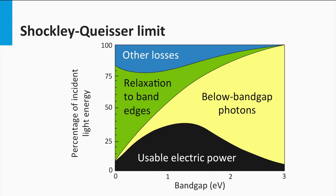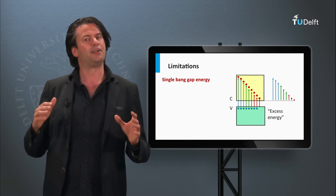As a result, the maximum efficiency which can be achieved is around 33% in the bandgap range from 1 eV up to 1.8 eV, as indicated by the black area in the shown graph.